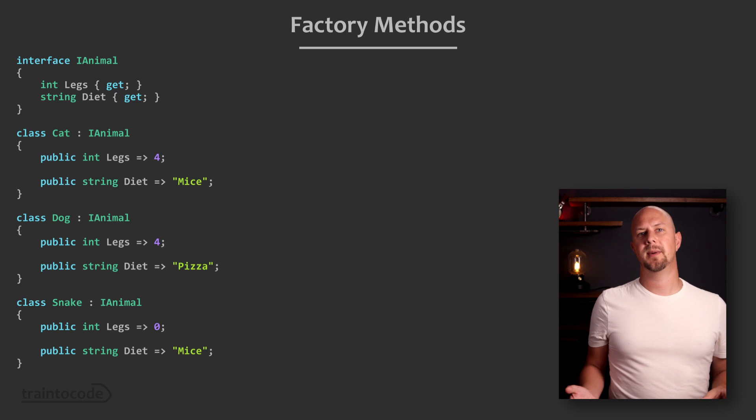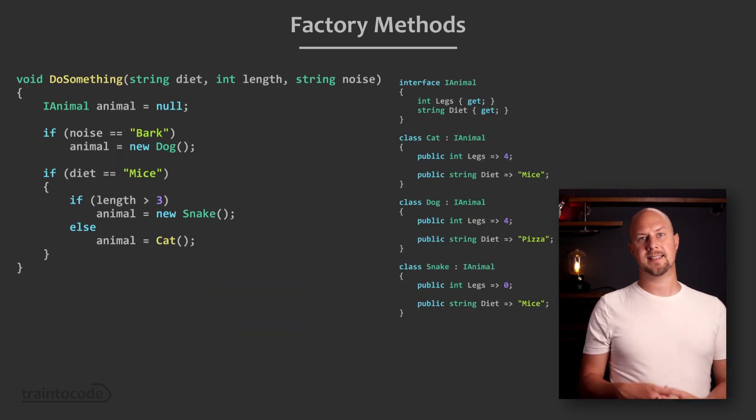Now at various points in our code we might want to create a new instance of one of these classes and we have some logic that decides which class to create. So if we have a function here that identifies an animal from some attributes the logic might say if it barks then create a dog.